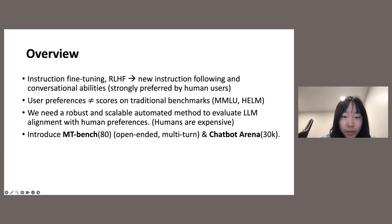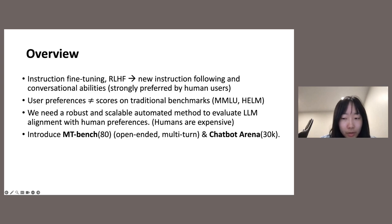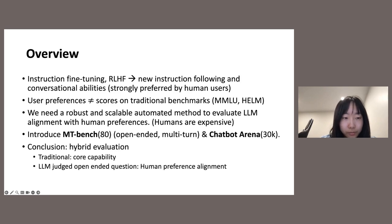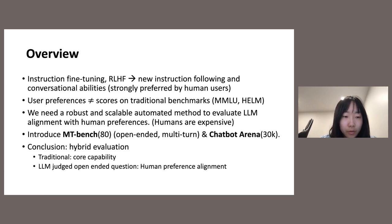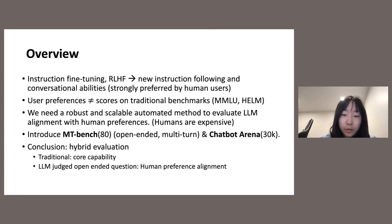The second dataset, Chatbot Arena, is collected from the arena platform we mentioned before — these are from the real world with real human preferences. Both benchmarks are intended to be used with LM-as-a-judge, as open-ended questions are hard to automate, so we want to promote using LMs to judge answers. Despite proposing MT-Bench and Chatbot Arena, we want to emphasize that our benchmarks are mainly focused on human preference alignment. We argue for the adoption of a hybrid evaluation framework for future LM benchmarks, as preference-based benchmarks, LM-as-a-judge, and traditional benchmarks all have their pros and cons.